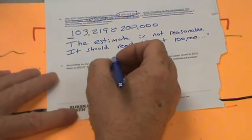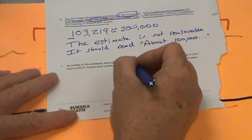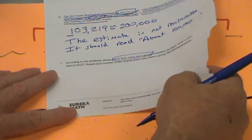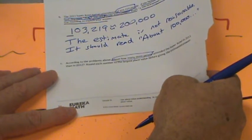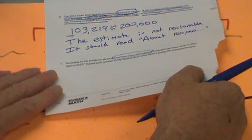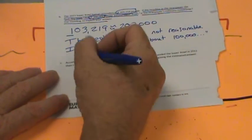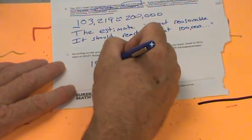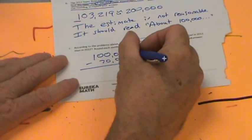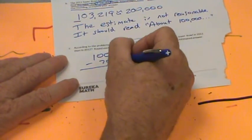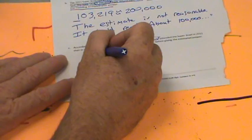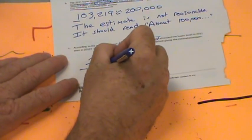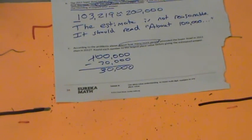According to the problems above, about how many more people attended the Super Bowl in 2011 than they did in 2012? Round each number to the largest place value before giving the estimated answer. We already did that. So our estimated answer, we're going to round this to 100,000, the 2011 game. In the 2012 game, we already rounded to 70,000. And it gives us a chance to do some subtraction. 0 minus 0 is 0. Can I take 7 from 0? Nope. I have to go like this. Now we have 10,000s minus 7,000s, 8,000, 9,000. So we're getting an answer of 30,000. So about 30,000 more people attended the 2011 Super Bowl than the 2012.